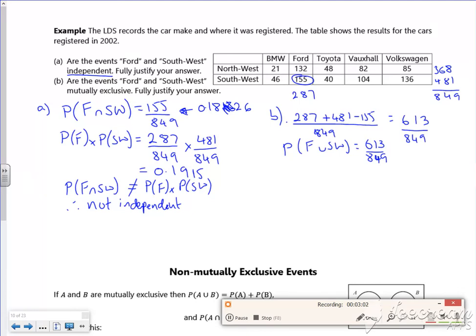Now that should be the same as the probability of a Ford add the probability of Southwest for them to be independent. So Ford we said is 287 over 849, Southwest we said was 481 over 849.